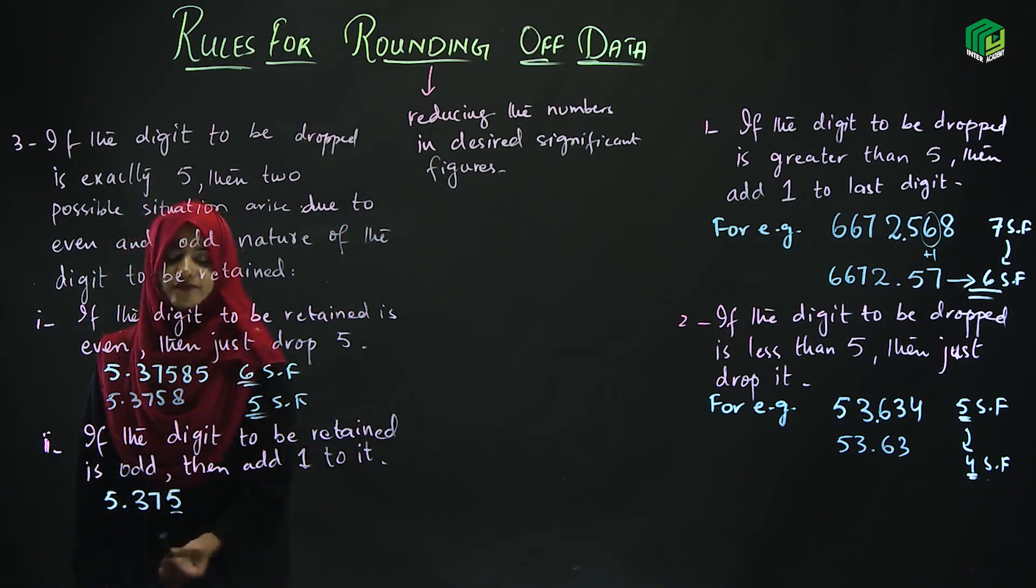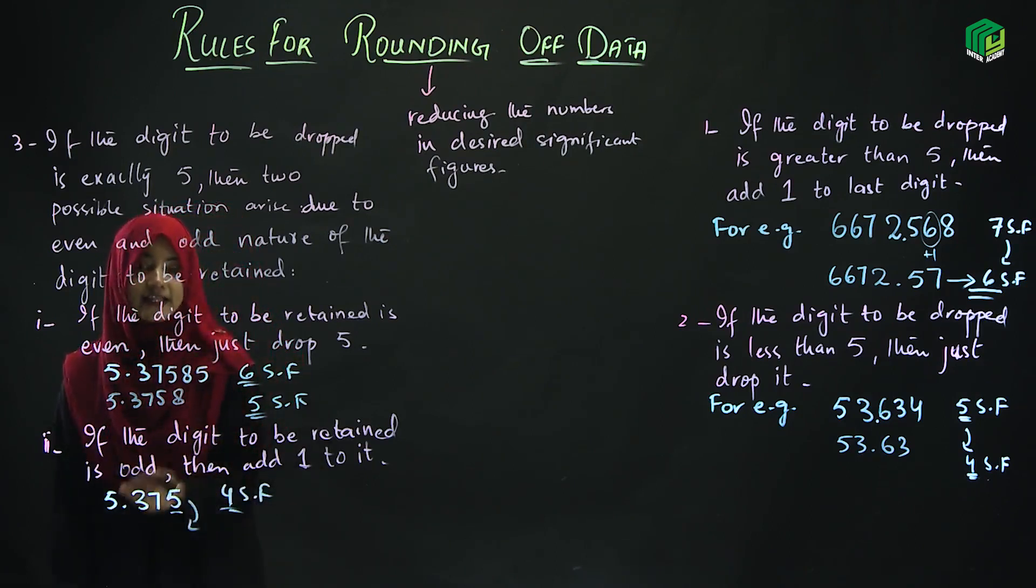Let's take the example of 5.375. If we look at this, 5 will drop. And at this time, how many significant figures are there? 4 significant figures. If we drop 5, we have to pay attention to the neighboring number. So what is the neighboring number? Even or odd? It is odd. So what will you do? When you drop 5, you will add 1 to the number 7.